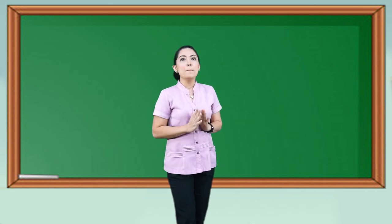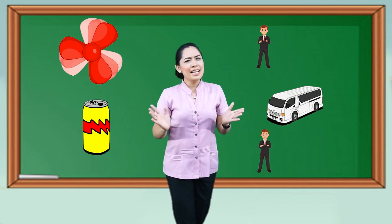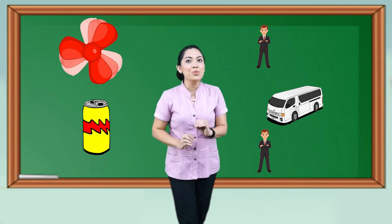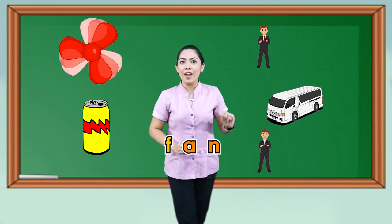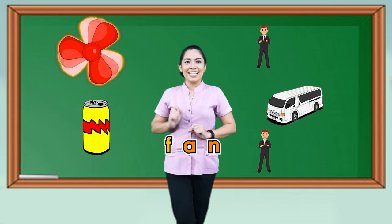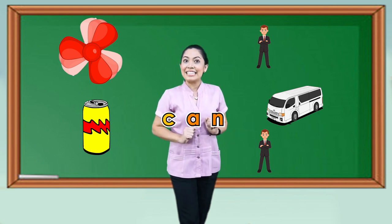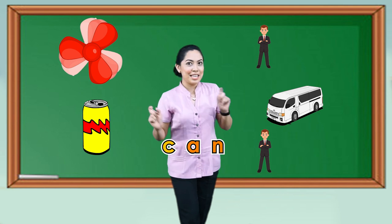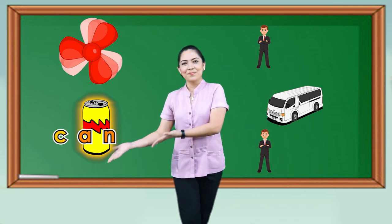To begin, I have here some pictures. I would show some words and let's find out which among the pictures it is referring to. Let's begin with: Fan. Which one is that? This is fan. Next word — Can. Which one is can? Correct, this is can.